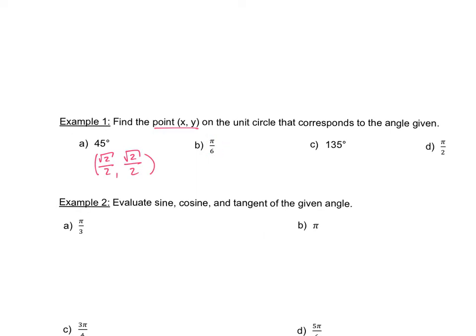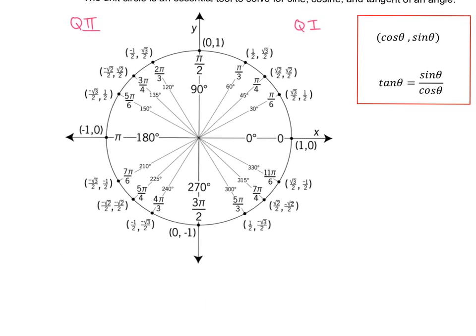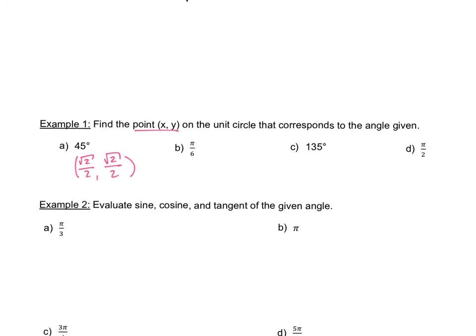For pi over 6, that is equivalent to 30 degrees. The coordinate is square root of 3 over 2 and 1 half — so square root of 3 over 2 comes first, and then 1 half.